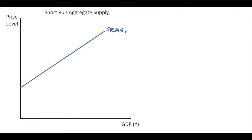What we see here is that the short run aggregate supply curve is actually shifted by the exact same things that cause the long run aggregate supply curve to shift.